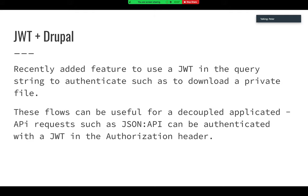I've recently added a feature that also lets you use a JWT in the query string to authenticate requests, such as to download a private file. I implemented this because I didn't want to deal with the hassle of figuring out how to make a decoupled frontend present a link that a user could simply click to download a private file. Now I can basically just give the user the link to the private file plus the query string and it just works automatically.